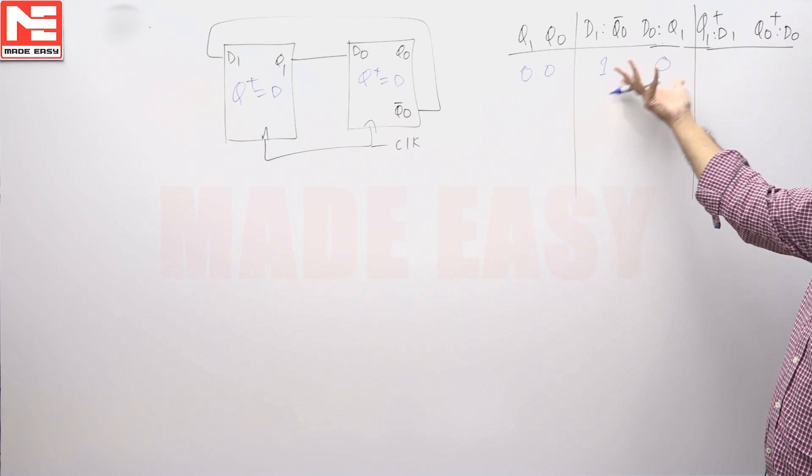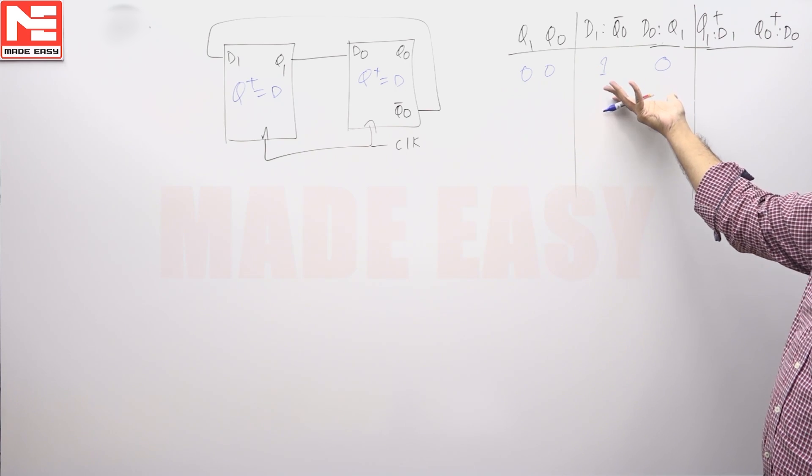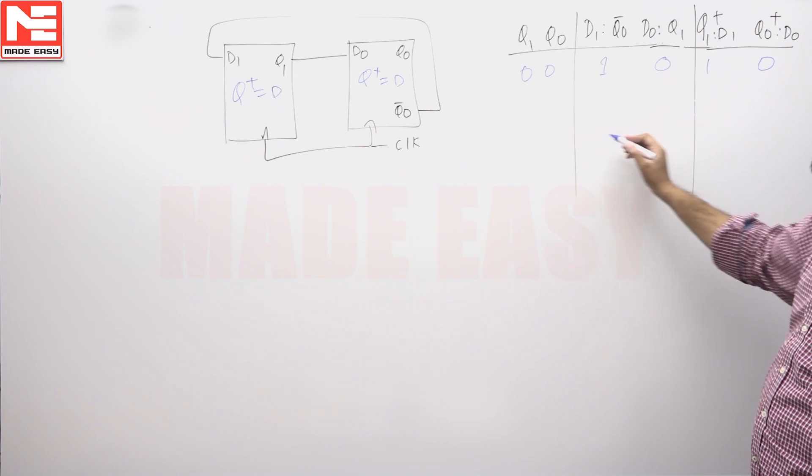So whatever is this value, same thing will be the next state because Q plus equal to D. Whatever is the D value, same thing will be the next state, so next state is 10, so this will be 10.